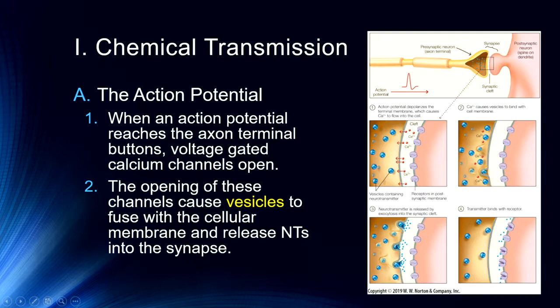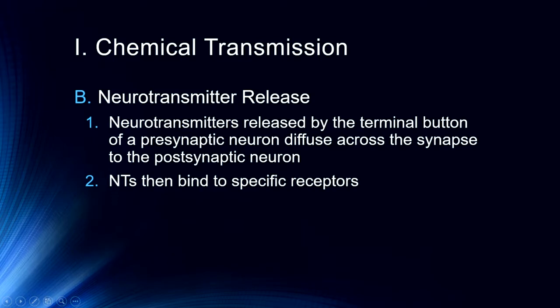Neurotransmitters are packaged in small packets called vesicles, and the entering of calcium into the cell triggers them to fuse with the cellular membrane and release the neurotransmitter into the synapse in a process known as exocytosis. Those neurotransmitters are released by the terminal button of a presynaptic neuron and then diffuse across the synapse to the postsynaptic neuron, released through exocytosis when the action potential causes those voltage-gated calcium channels to open.